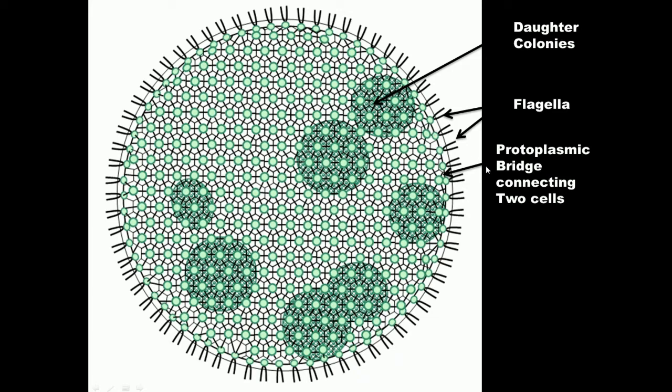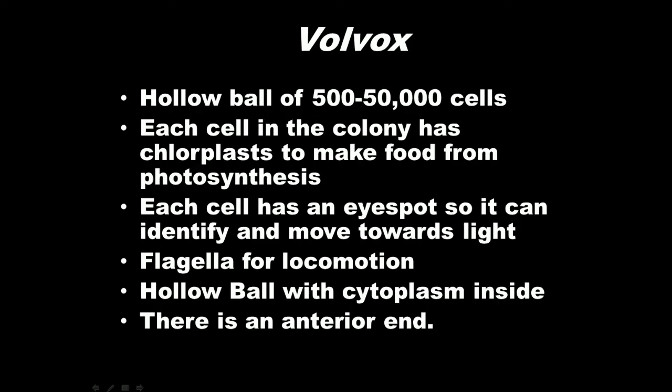Some other facts about volvox. It's a hollow ball of 500 to 50,000 cells. Each of the cells has photosynthetic capability through chloroplasts. They have eyespots so they can identify and move towards light, and they use flagella for locomotion.